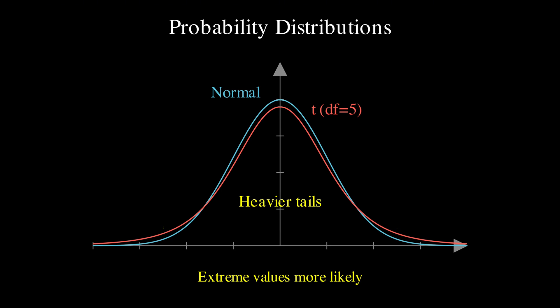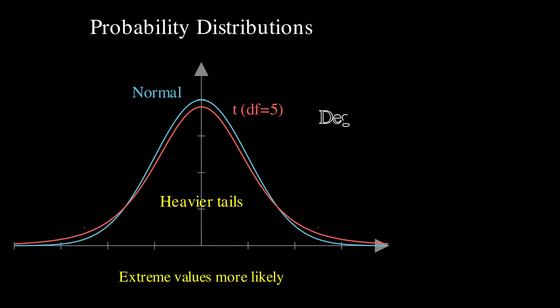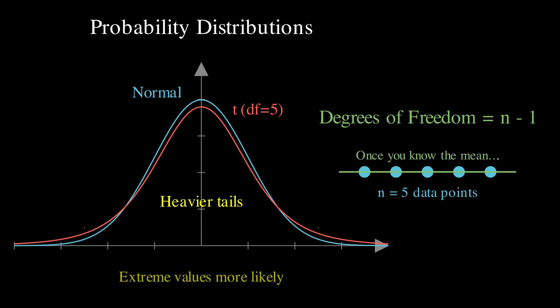The shape of the t-distribution depends on something called degrees of freedom, which for a simple case, like estimating a mean, is just n minus 1, where n is our sample size. And the reason it's n minus 1, rather than n, has to do with the fact that once you know the sample mean, and n minus 1 of the data points, the last data point is determined. So you have really got only n minus 1 independent pieces of information.